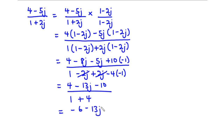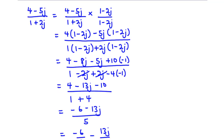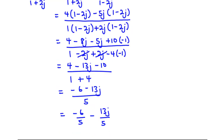So we have (-6 - 13j) divided by 5, which gives us -6/5 minus 13j/5. Therefore, (4 - 5j) divided by (1 + 2j) equals -6/5 - 13j/5.